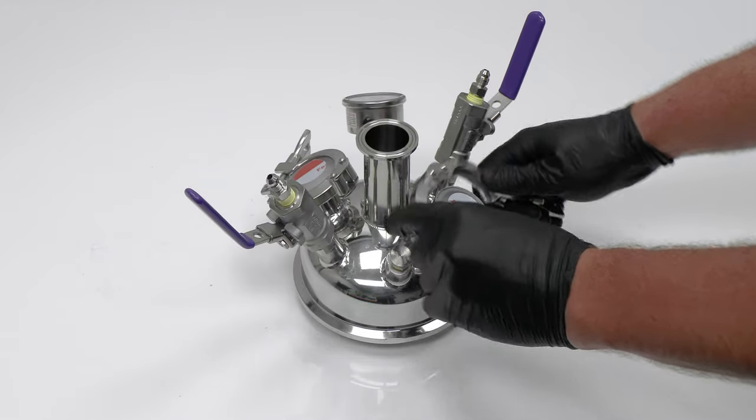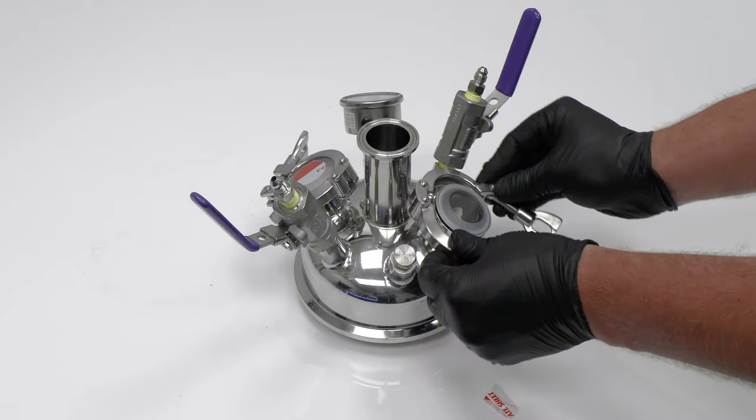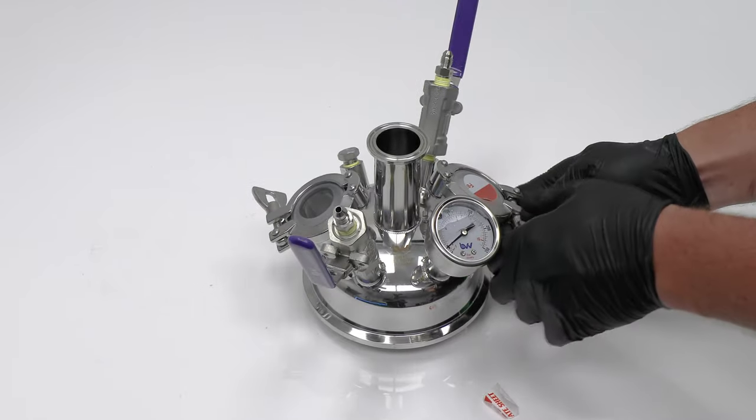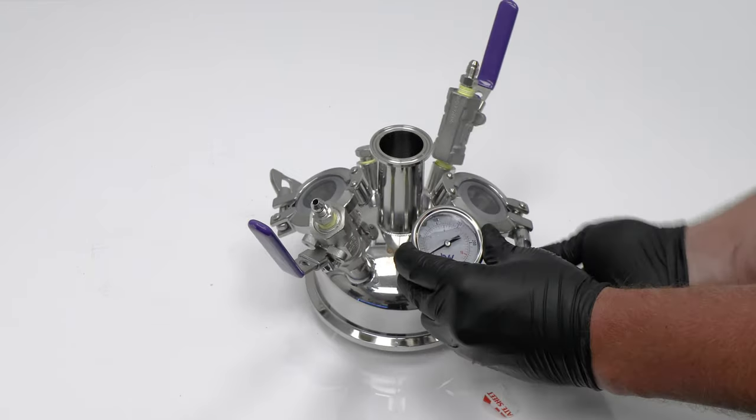How to assemble a one pound Apollo extractor. Start by removing the protective film on both sight glasses. Replace the clamps on both sight glasses.